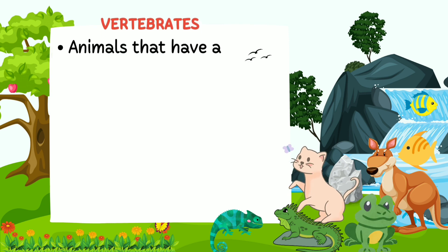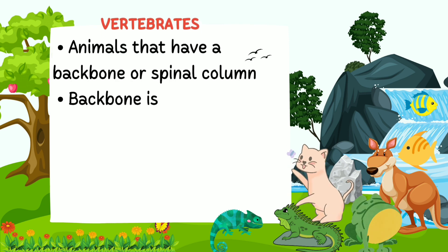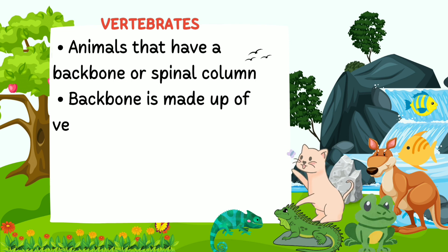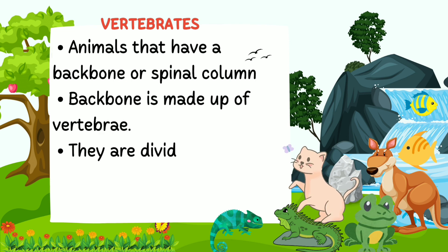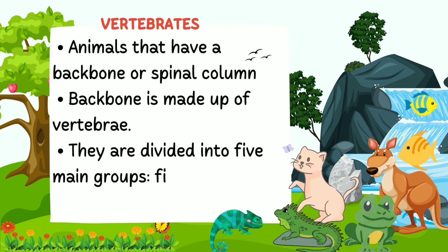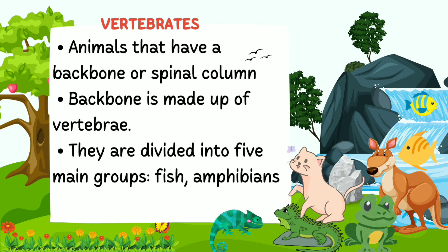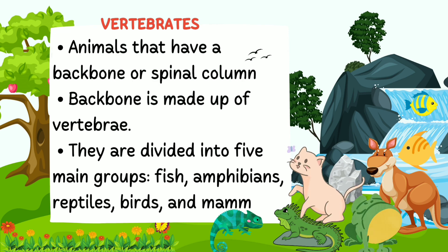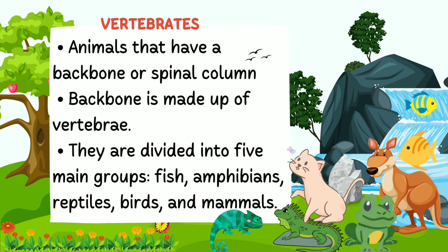Vertebrates are animals that have a backbone or spinal column which is made up of vertebrae. They are divided into five main groups: fish, amphibians, reptiles, birds, and mammals.